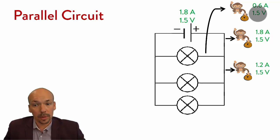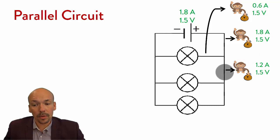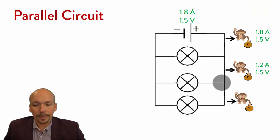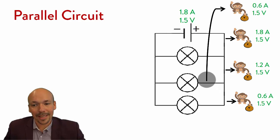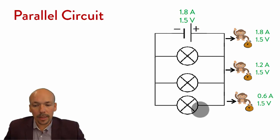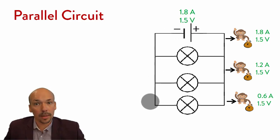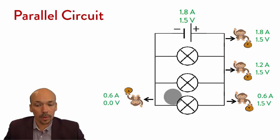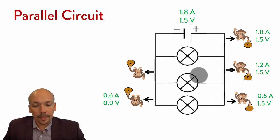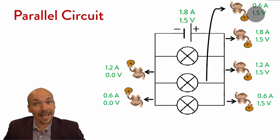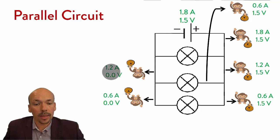So 0.6 amperes go through the first lamp with their 1.5 volts, and 1.2 amperes continue along the main path also with 1.5 volts. Here they split again: 0.6 amperes continue to the second lamp with 1.5 volts, and 0.6 amperes go to the third lamp with 1.5 volts. After passing through a lamp, the volts are used and it becomes 0 volts — the amperes continue back to the battery. Then the 0.6 from one branch rejoins the other 0.6, making 1.2 amperes on their way back.